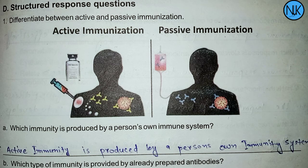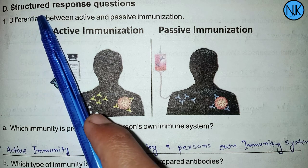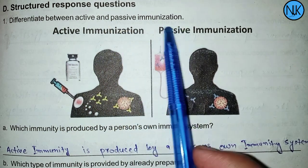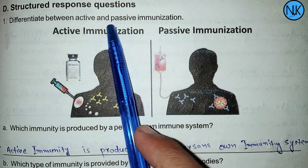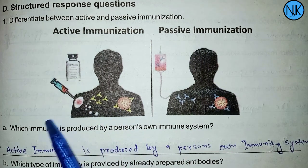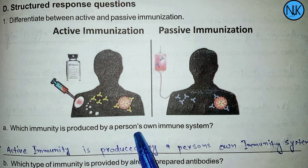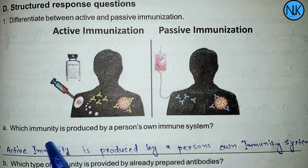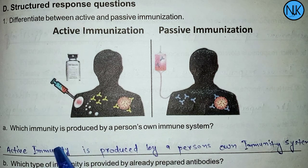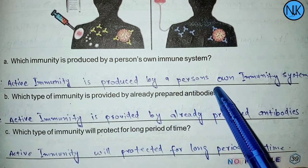Welcome to In UK Education, Chapter 3, Question 3, Structured Response Question 1: Differentiate between active and passive immunization. Active immunity is produced by a person's own immune system.